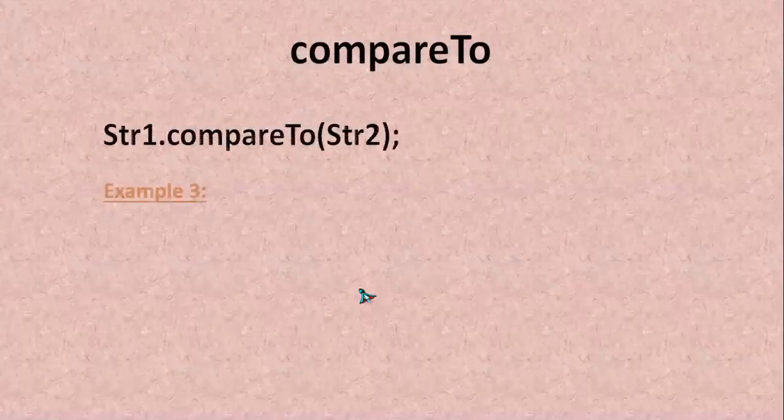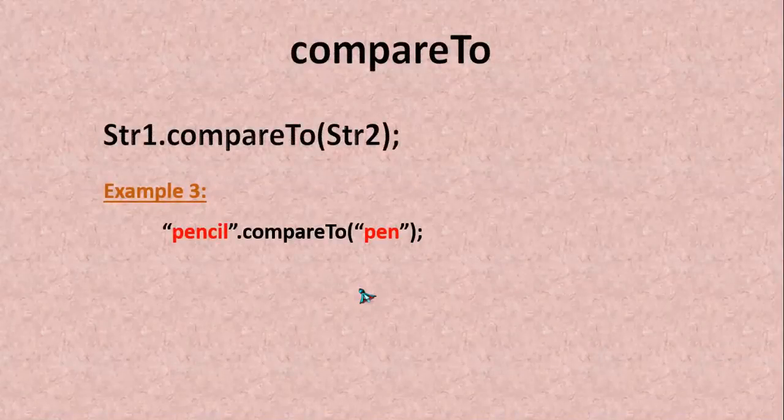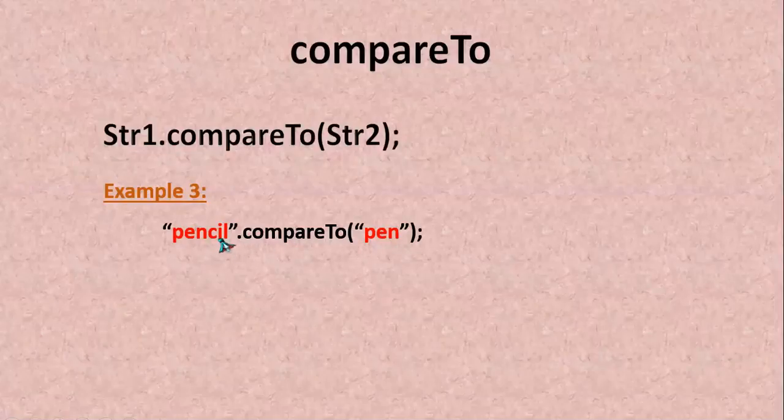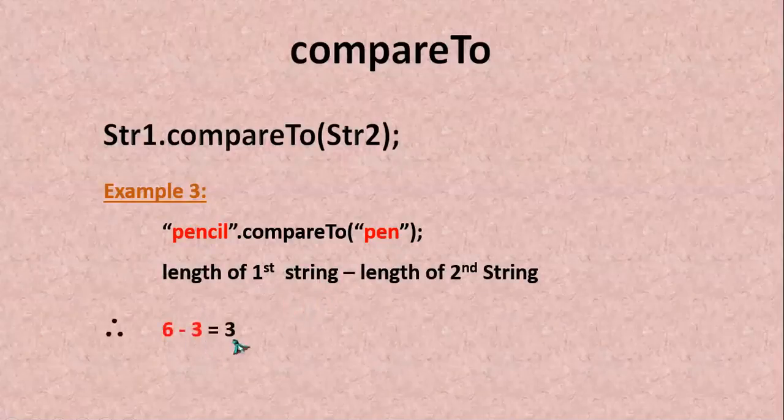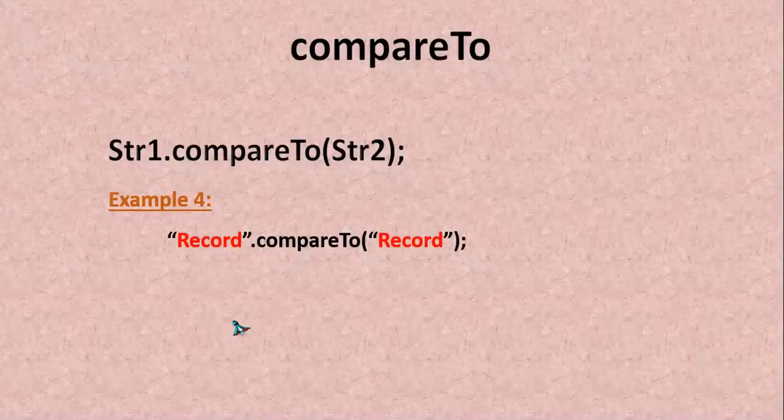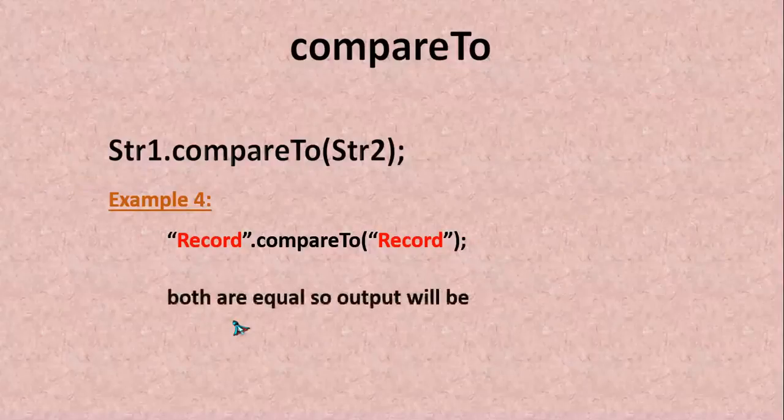Next here I have pencil dot compare to pen. It is going to compare these two. See here pen is already there in the pencil. Later whatever the character is available in pencil is not there here. It is going to compare the length. That is pencil's length is 6 and the pen length is 3. 6 minus 3 it is going to be 3 is the output. Next I have here record compare to record. Both are same. Both are same. The output is going to be 0.